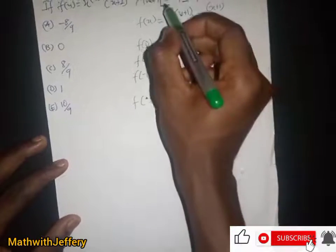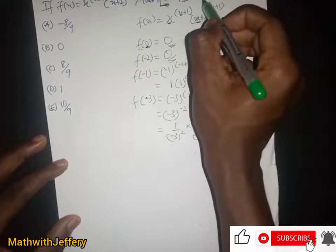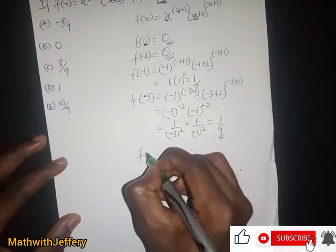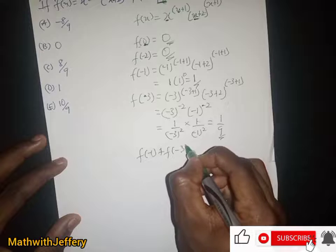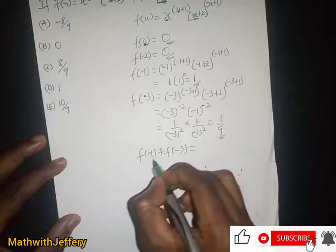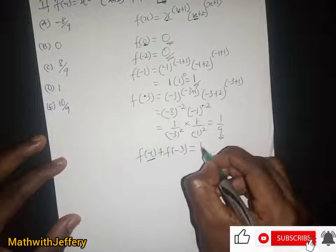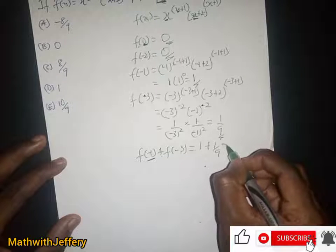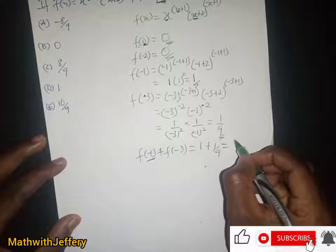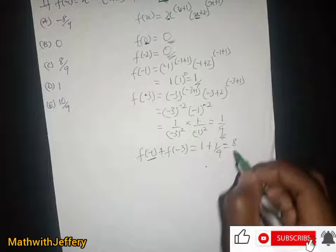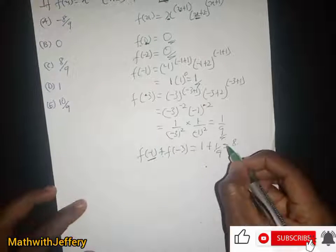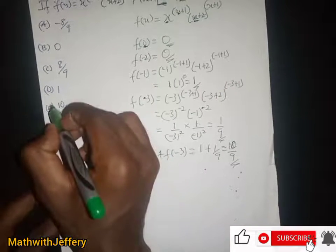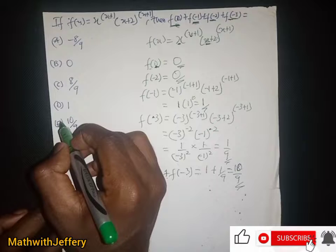So we are left with f(-1) and f(-3). f(-1) + f(-3) = 1 + 1/9, and we get 10/9. The answer is E.